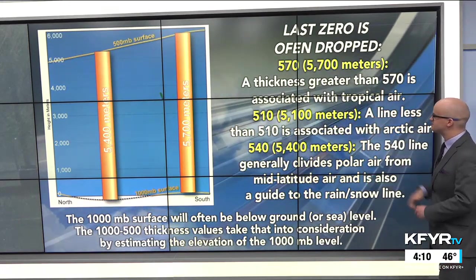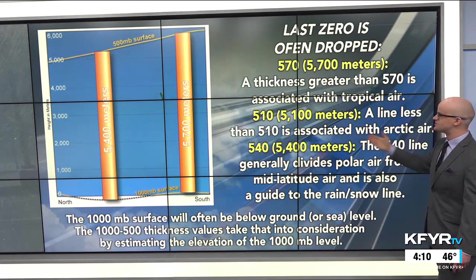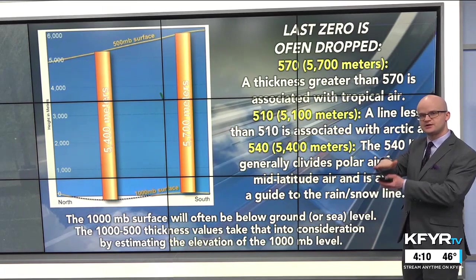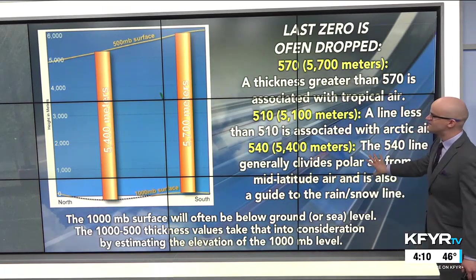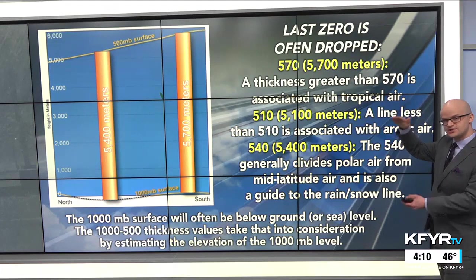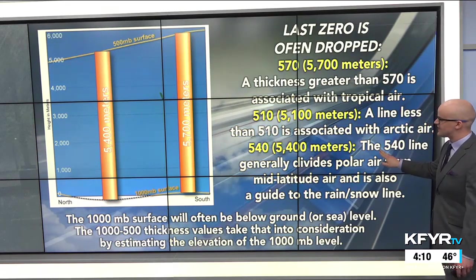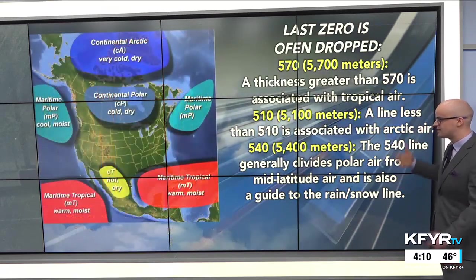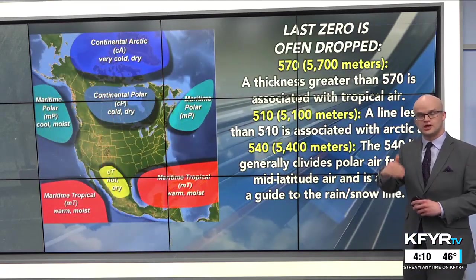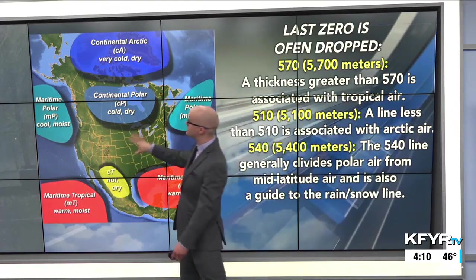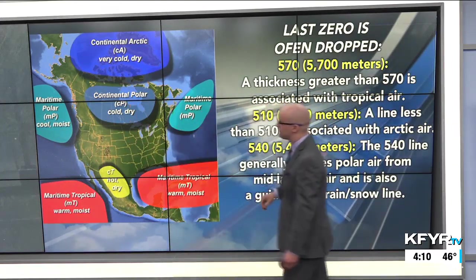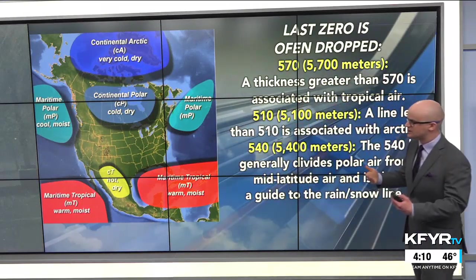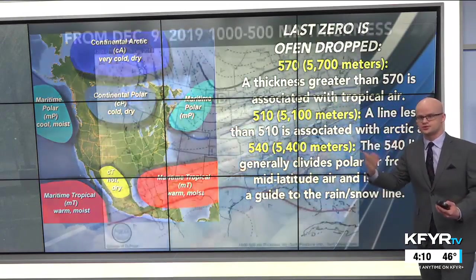A 510 thickness value or less is associated with Arctic air — the thickness is smaller, the air is more tightly packed, denser, colder. A value of 540, or 5,400 meters, representing the distance between the 1,000 and 500 millibar levels, generally divides polar air from mid-latitude air. It's a guide for our rain-snow line, so it can really help diagnose precipitation types. All of these thickness levels help us figure out where different air masses are, especially diagnosing tropical versus polar air.